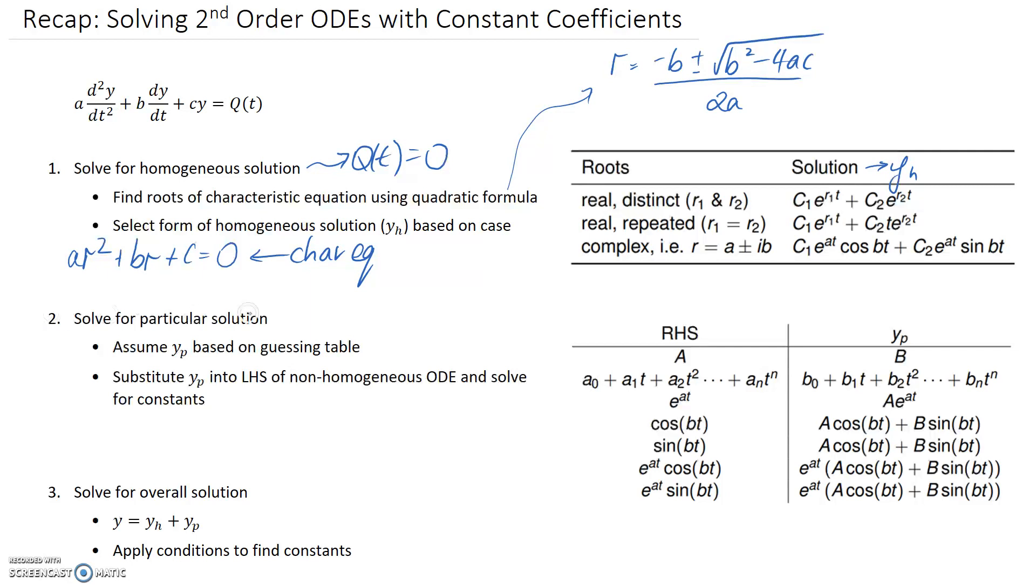Alright, so the next step then is to look for the particular solution. So this is where we go back and say, okay, q of t isn't necessarily 0, it's potentially something else. If q of t was actually 0 for you, for your ODE, then you can just skip over this step because the particular solution will just be 0 as well. So you don't really need to do it.